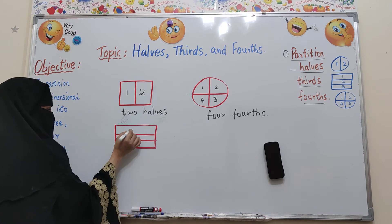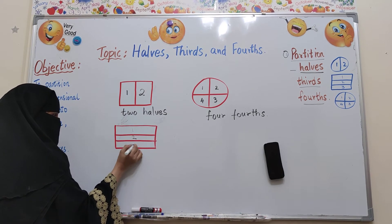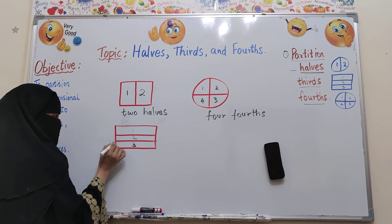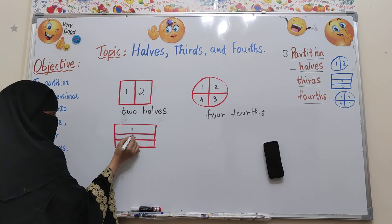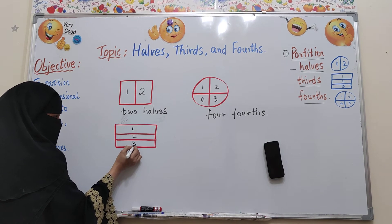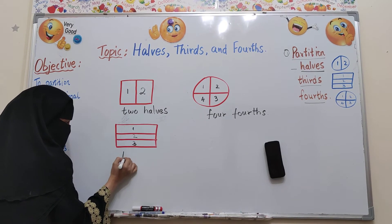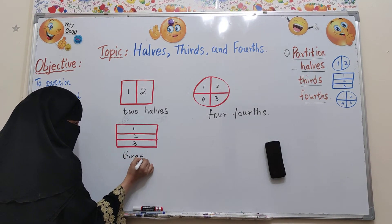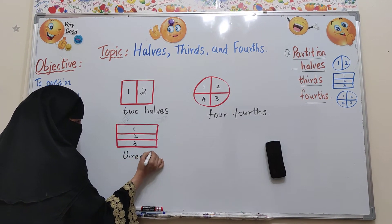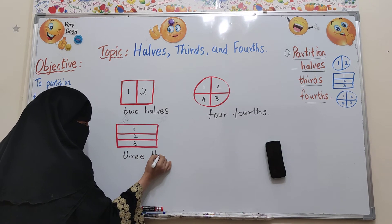Here how many equal parts? One, two, three. So how many parts are there here? Three thirds.